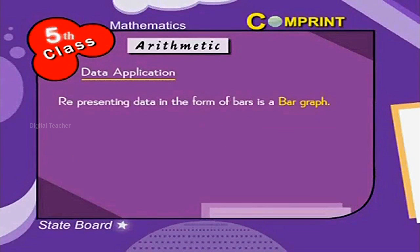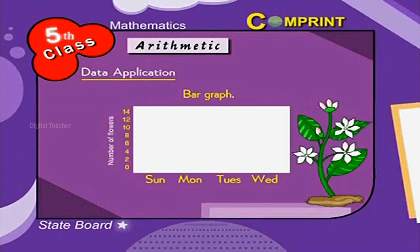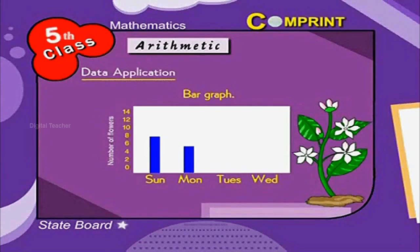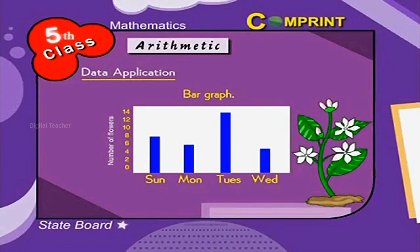Representing data in the form of bars is a bar graph. For example, show the graph of flowers plucked from Soy's house for 4 days. We can show this as Sunday 8 flowers, Monday 6 flowers, Tuesday 14 flowers, Wednesday 10 flowers.